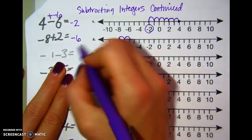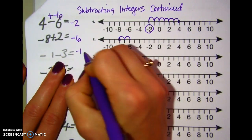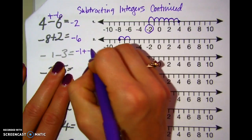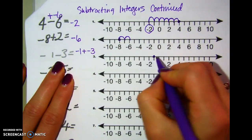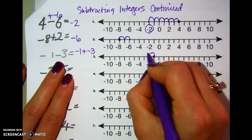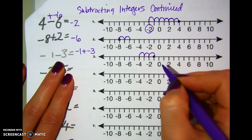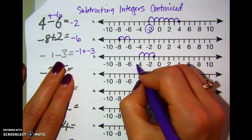Negative 1 minus 3, I can rewrite that, add the opposite, so add a negative 3. If I start at negative 1, and I add negatives, add 3 negatives, I'm going to go to the left, and I end up at negative 4.